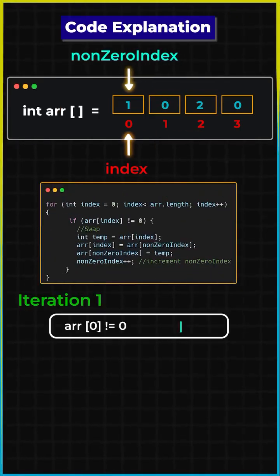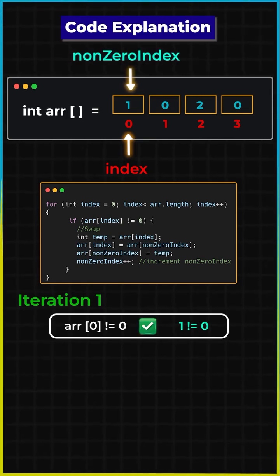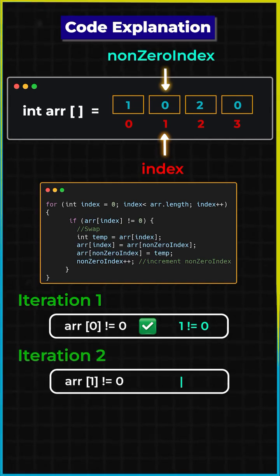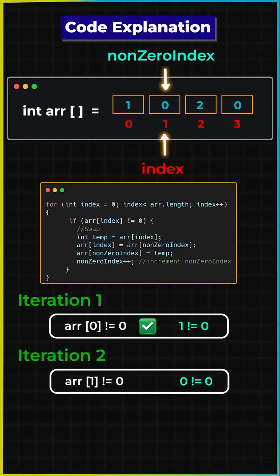For the first iteration, arr[0] != 0, which is true, so we will do the swap and increment the non-zero index by 1. Similarly, for arr[1] != 0, the condition is false, so we will skip the swap.